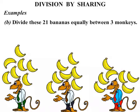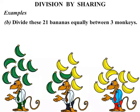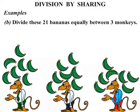Let's see how many each get. 1, 2, 3, 4, 5, 6, 7. The first monkey gets 7 bananas. 1, 2, 3, 4, 5, 6, 7. The second monkey also gets 7 bananas. 1, 2, 3, 4, 5, 6, 7. 7 bananas for the third monkey as well. So each monkey gets 7 bananas.